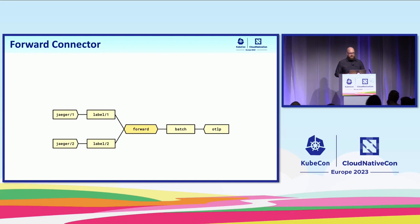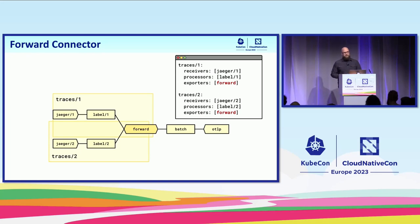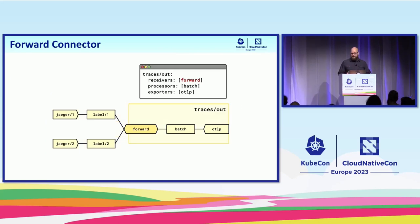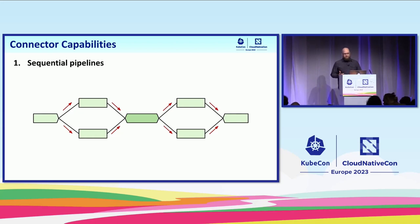To configure this, first of all we have a new section in the configuration for configuring connectors, just like the other classes of components. When we use the connector in the pipelines, we use it in place of the exporter or receiver. Here's another example of using the forward connector. I just showed you how we could use it to replicate data streams. Let's merge data streams with this example. We're receiving two different data streams, labeling them so we can tell them apart, and then we'll run them through a forward connector, do some more processing, and export.